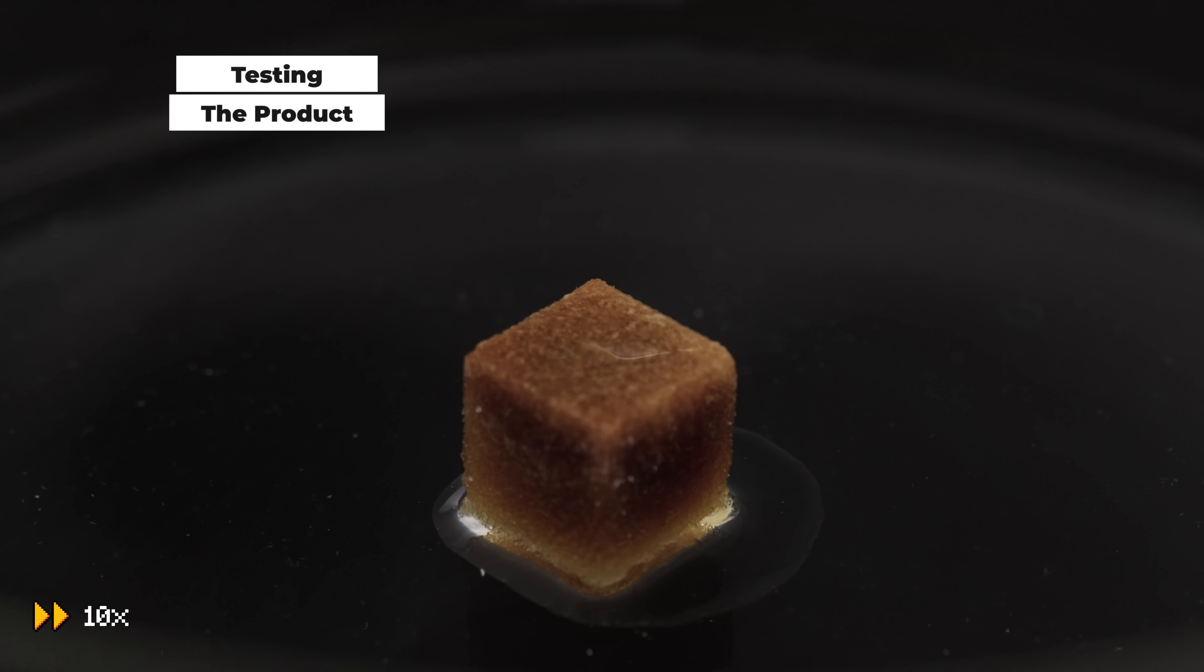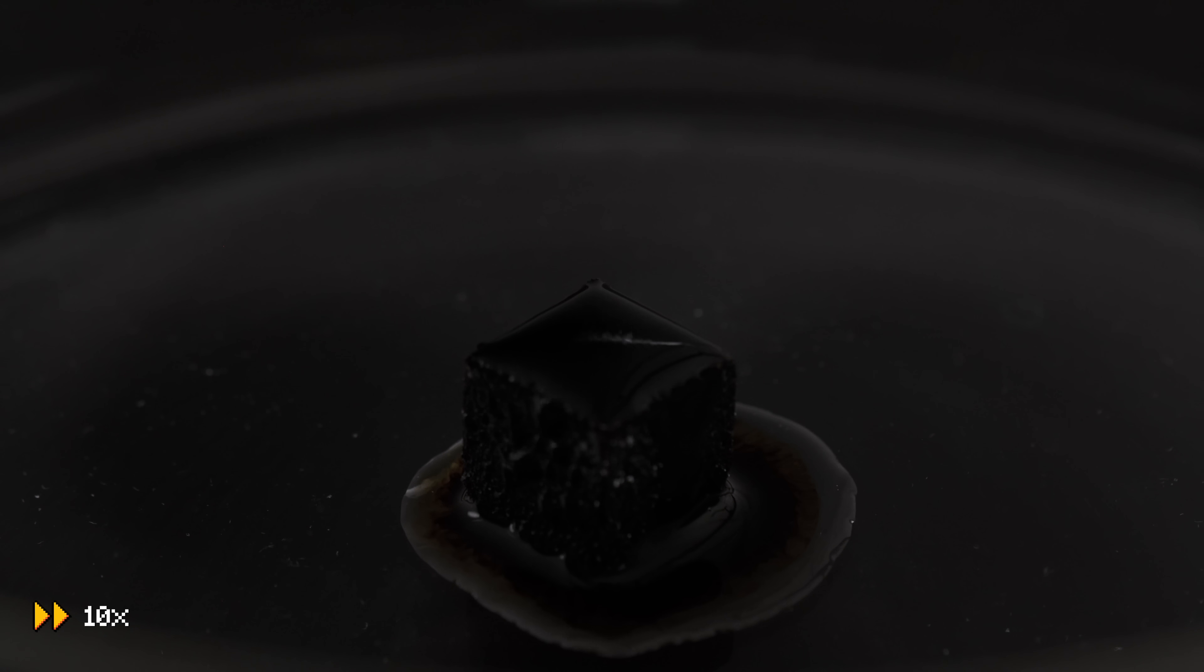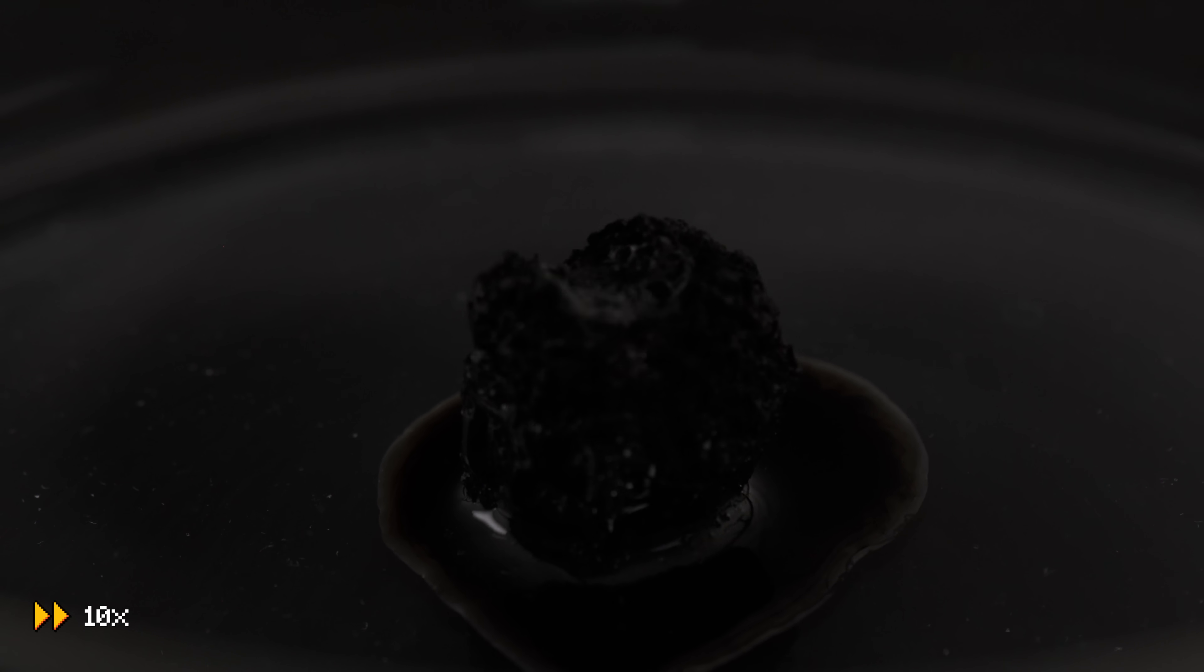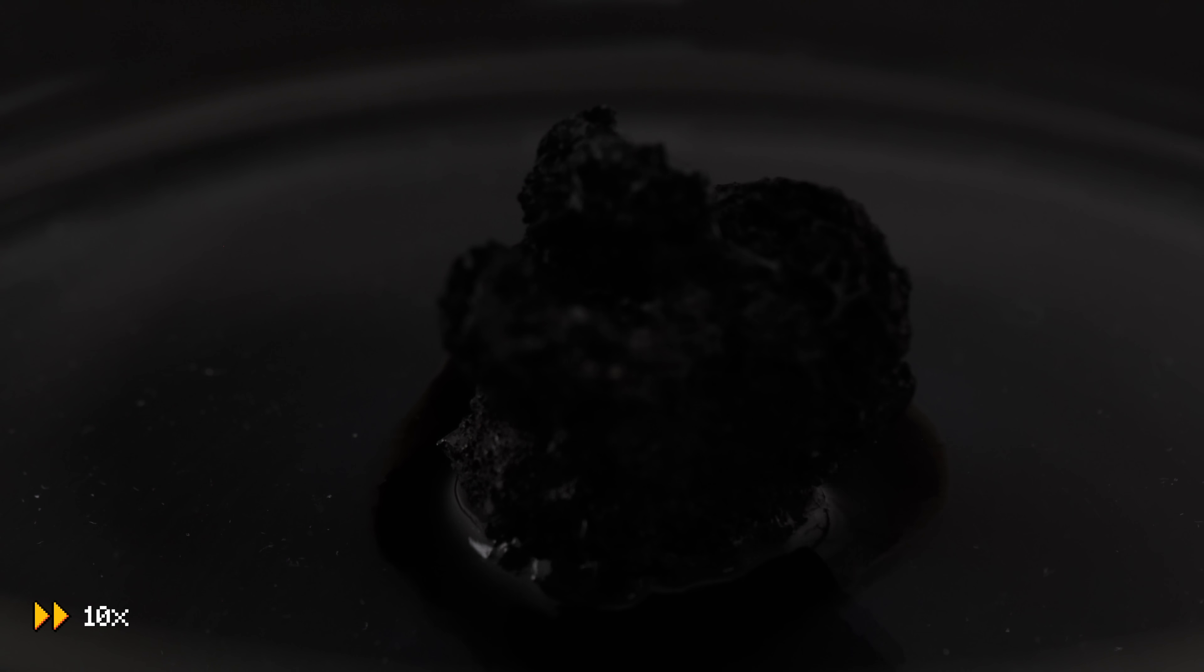Concentrated sulfuric acid is very well known for its dehydration property. To test the product you just collected, simply drop a few drops to a sugar cube. The sugar cube will soon start to turn brown then black, releasing heat and water vapor, eventually dehydrated to a black piece of carbon.